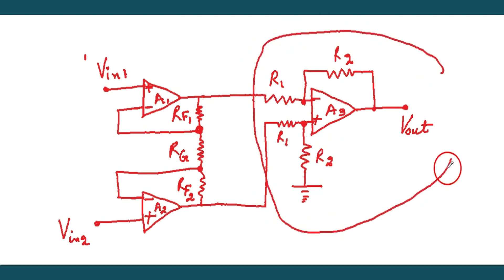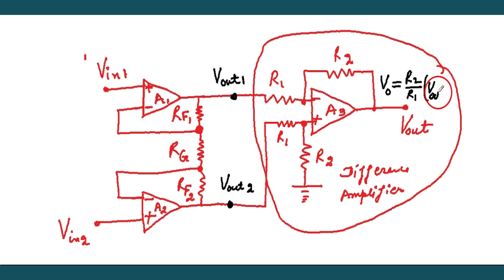This circuit is actually difference amplifier. It will give you the difference. Output will be the difference of the two inputs, like Vout1 and Vout2. The Vout will be equals to, you know, like R2 over R1, Vout2 minus Vout1. This is difference amplifier.